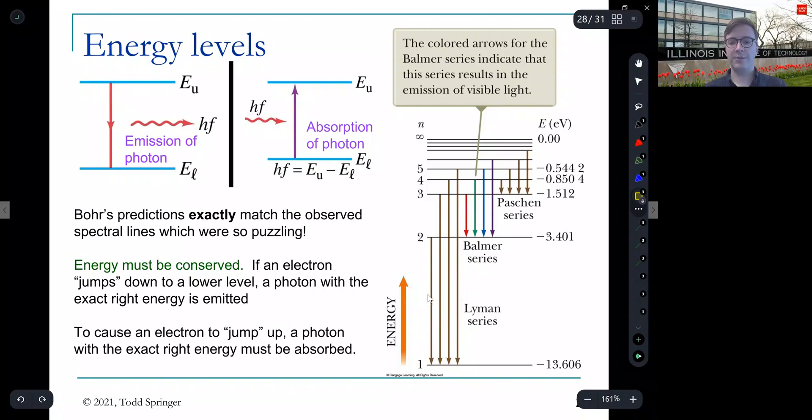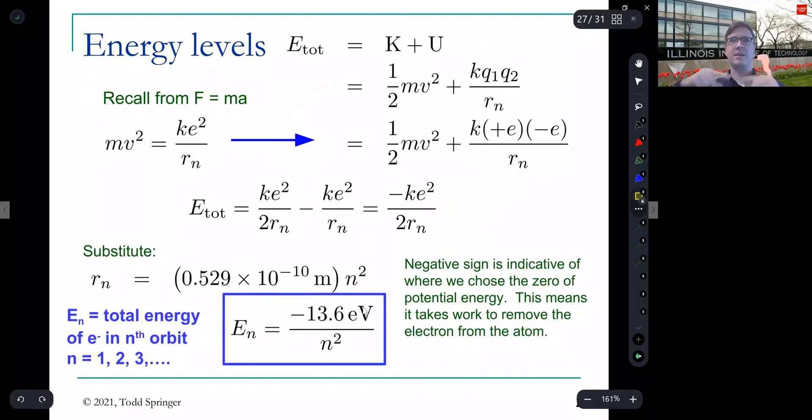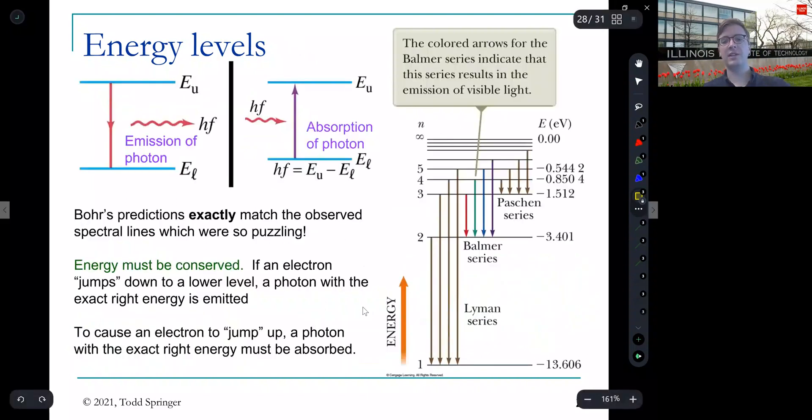N equals five down to N equals one that has a certain photon energy associated with it. A photon with a certain energy will come out and four down to one different energy, three down to one a different energy, six down to two, a different energy and so on. Now, all of these photons, the ones that are brown here are not visible. They're outside of the visible range of humans. But these four, the ones that end up in N equals two are visible. And those are exactly the four wavelengths that show up when you pass a current through hydrogen. You see those exact same wavelengths.